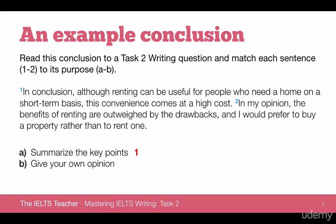Not too difficult on this one — A matches up to sentence one, summarizing the key points, while B matches up to sentence two, giving your own opinion. It's a little bit more logical to structure the conclusion this way as it makes sense to leave the reader with a clear understanding of what your viewpoint is. Remember this is only for discussion opinion essays or opinion essays. This one looks like a discussion opinion essay because we have looked at the drawbacks. There are some very important words and phrases in this conclusion which we're going to focus on in a moment.